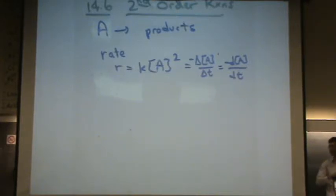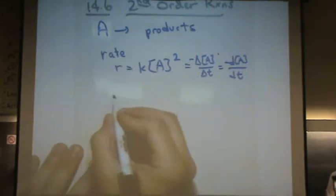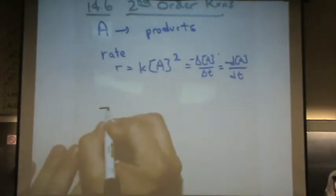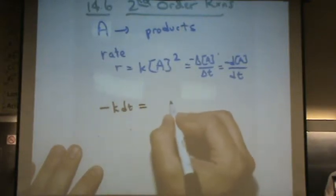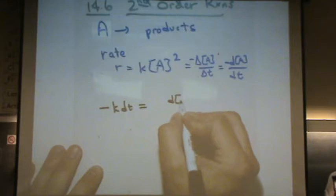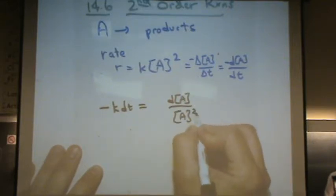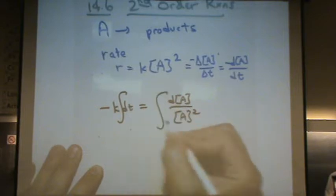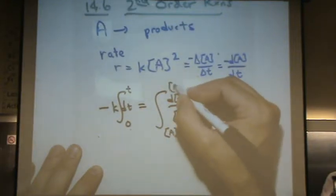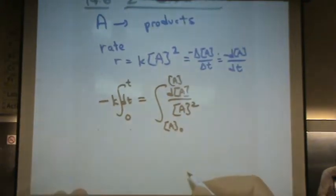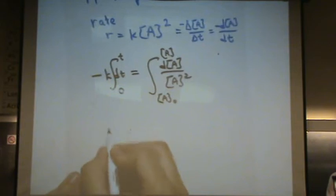For those of you who don't care or don't want to know about calculus, you can zone out for about 30 seconds and do your Sudoku. So, minus K dt equals dA over A squared. Integrate this from zero to time t. At time zero, we have initial concentration A naught. Time t, you have some concentration A.